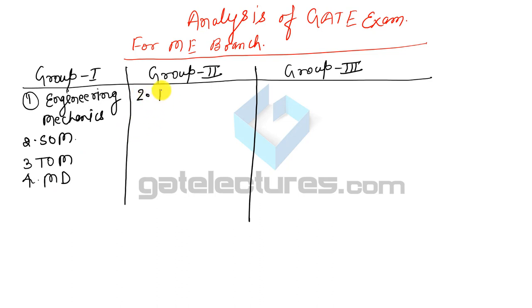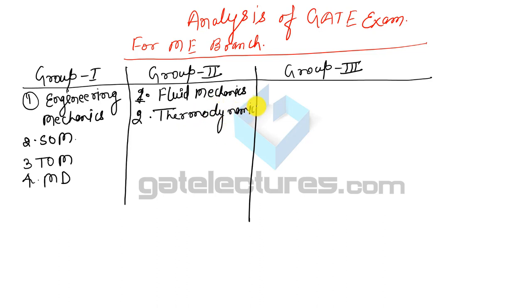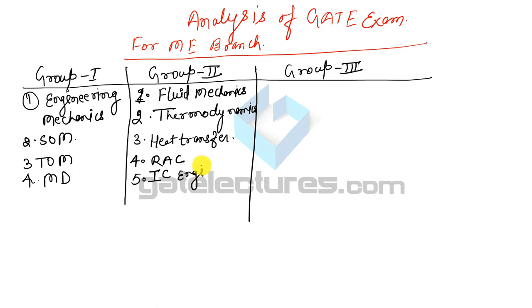In Group 2, the first subject is Fluid Mechanics, the second is Thermodynamics, the third is Heat Transfer, the fourth is Refrigeration and Air Conditioning, the fifth is IC Engine, the sixth is Power Plant Engineering, and the seventh is Turbo Machinery.